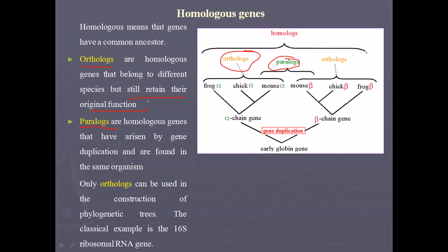Paralogous genes are homologous genes that have arisen by gene duplication and are found in the same organism. Sometimes an organism needs a particular gene to function more, so it copies that gene and attaches it along with the genome, making a repeated sequence of that gene within the same organism.